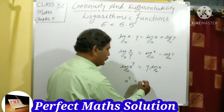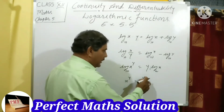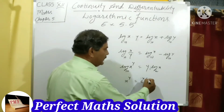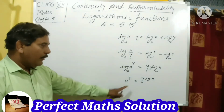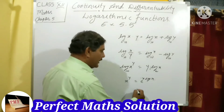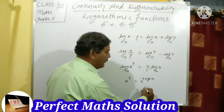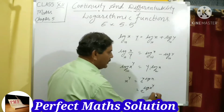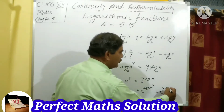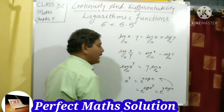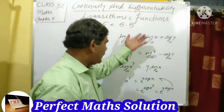x to the power y can be written as e to the power (y·log x). So x^y equals e^(y log x). By using this formula, log x to the power y equals y·log x. We will use these formulas to solve Exercise 5.5.